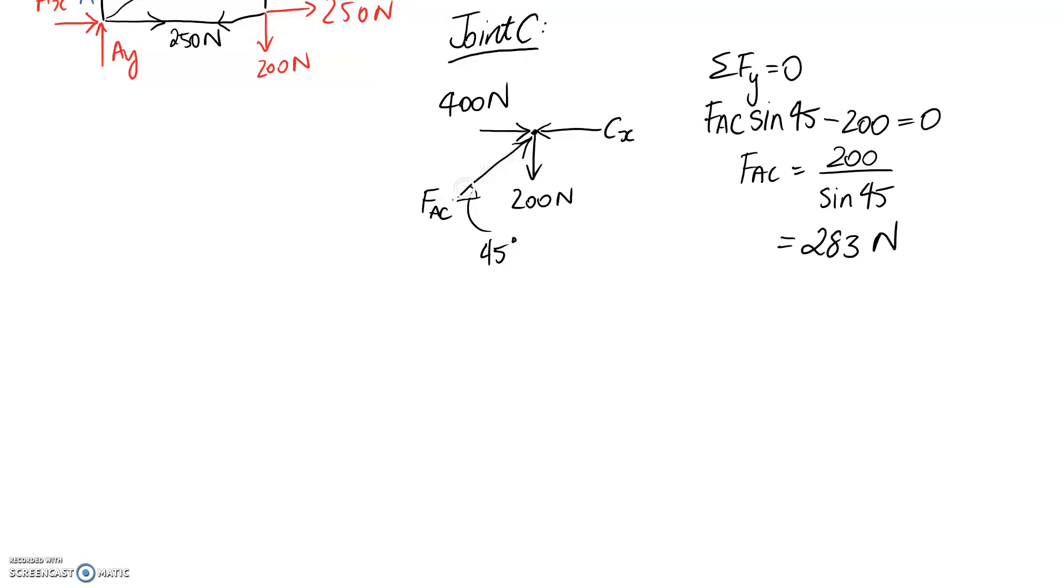We just need to then think about whether this is in compression or tension. Since this came out positive, we have the correct direction on the diagram, and it's pushing onto the joint, so that's going to represent a compression member. So FAC is 283 newtons in compression.